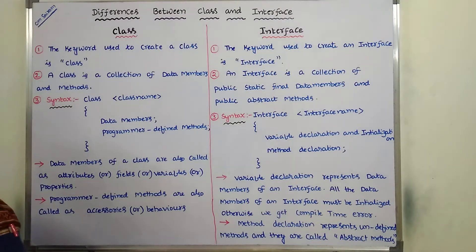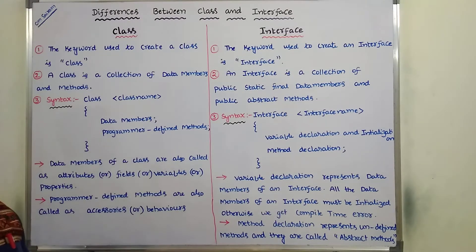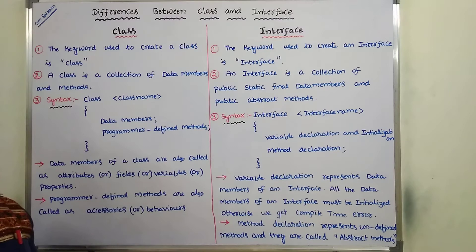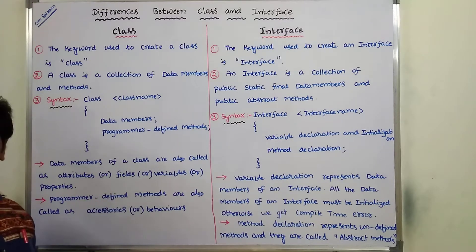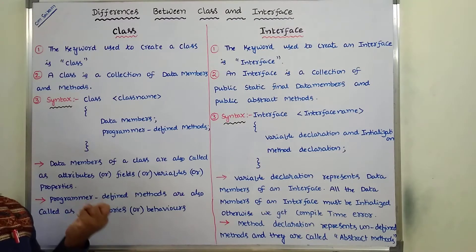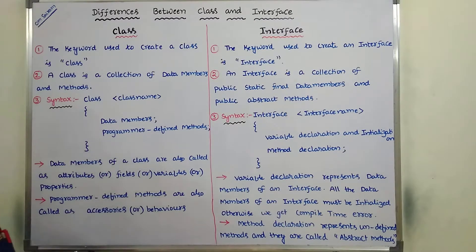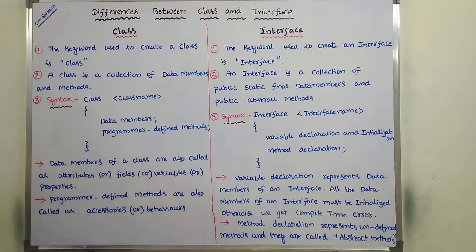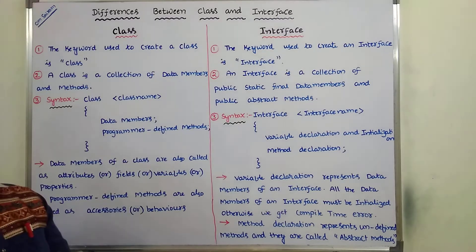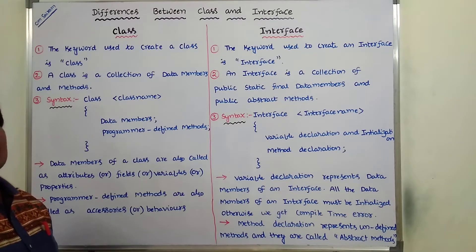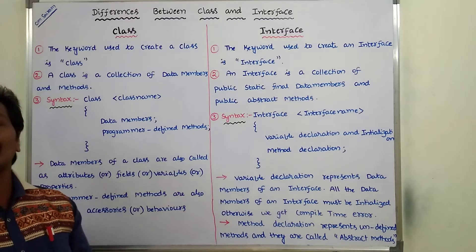The second difference: we have to discuss the definition of a class and the definition of an interface. A class is a collection of data members and methods, where the data members are also called as variables, fields, attributes, or properties. Whereas in the case of interface, an interface is a collection of public static final data members and public abstract methods.